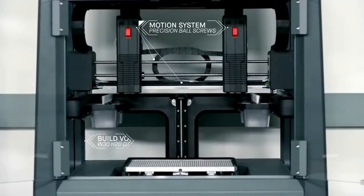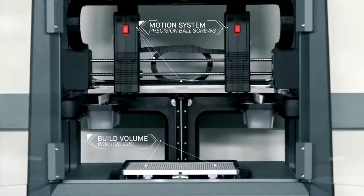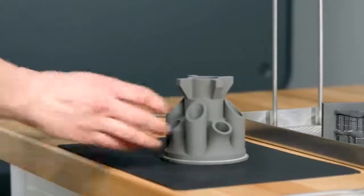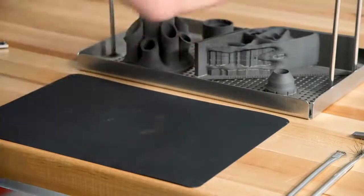Once the print is complete, the vacuum disengages and the print sheet and part are easily removed from the printer. The flexible sheet is designed to allow for easy removal of the part without damaging it during transfer.